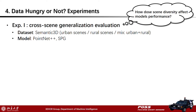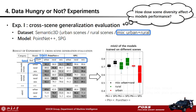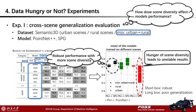In Experiment 1, cross-scene generalization evaluation, we do experiments on Semantic3D subsets — urban scenes, rural scenes, and mixed scenes including both — to answer: how does scene diversity influence model performance? We make cross-validation on these datasets. The box plot shows IOU for models trained on different scenes. Models trained on mixed data show narrow distribution, indicating robust performance with more scene diversity, while hunger of scene diversity leads to unstable results.